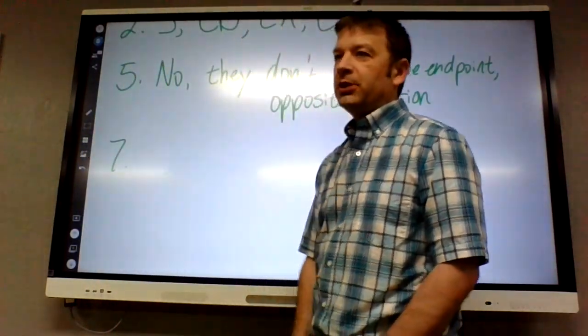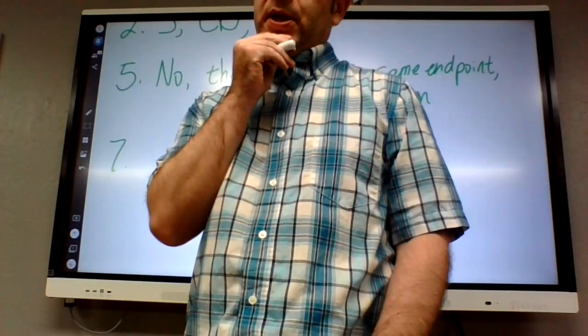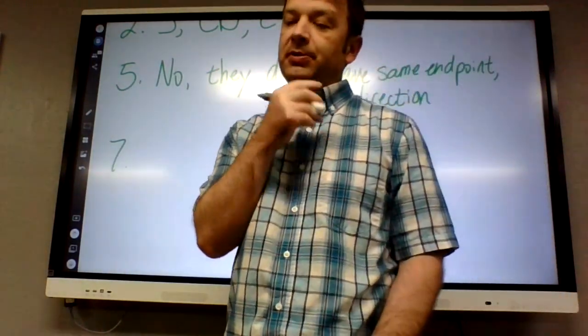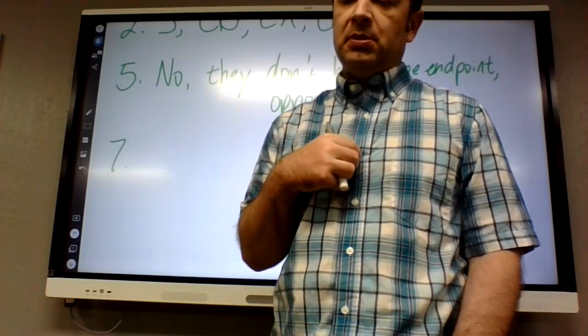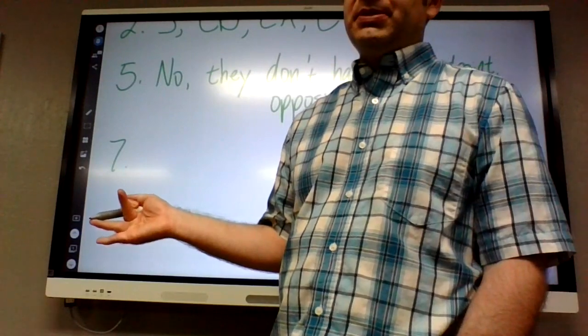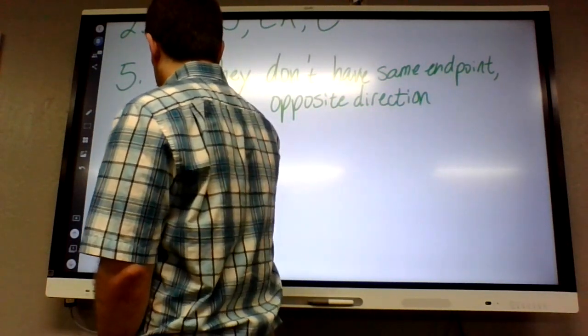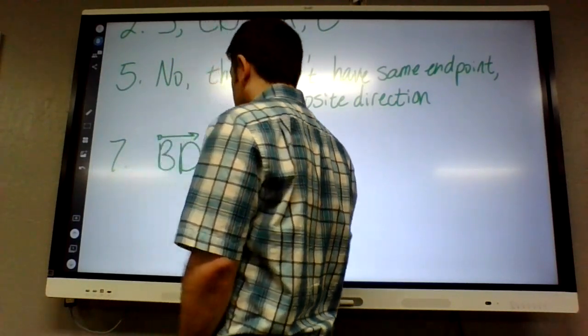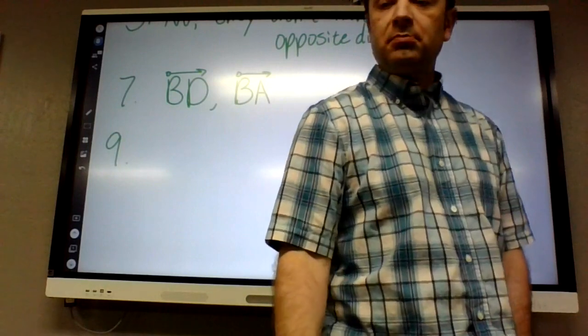Number six, using the same picture, we kind of already did something like this. Name two half lines determined by point B around point B. BD and BA. BD and BA. Now, is BD the same thing as BC? Yes. If you're talking about half line, yeah, it doesn't really matter.